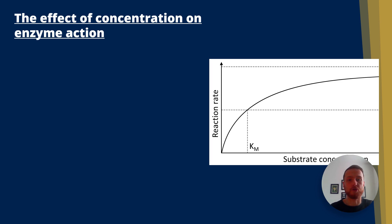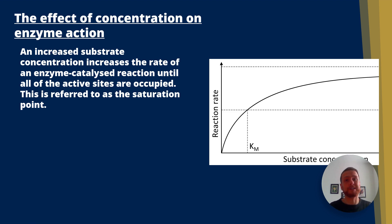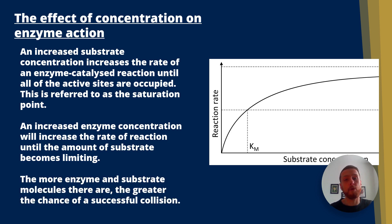Now the effect of concentration. An increased substrate concentration increases the rate of enzyme-catalysed reactions until all of the active sites are occupied — this point is referred to as the saturation point, and you'll see a link between that and the haemoglobin unit. An increased enzyme concentration will increase the rate of reaction until the amount of substrate becomes limiting. The more enzyme and substrate molecules there are, the greater the chance of a successful collision.